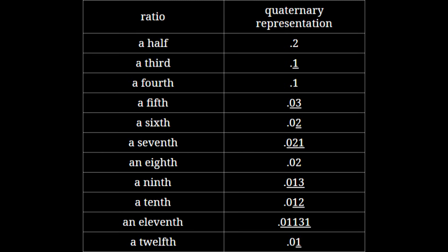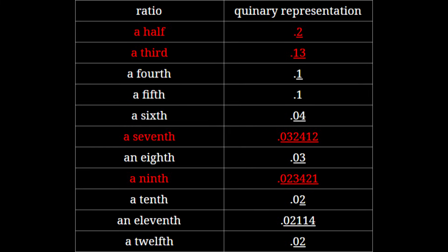Base 4 — quaternary! Quaternary is where things start to get interesting. Square bases can be used for compression, and quaternary is the smallest square base — it's really just a more efficient version of binary. It's still pretty small, and it can't really handle any non-power-of-two denominators, but other than that it's pretty solid. Base 5 — quinary. Quinary is a prime base, and a great example of why prime bases aren't great. A prime number is the exact opposite of what makes a good base.